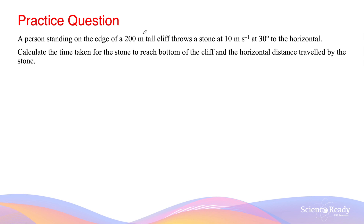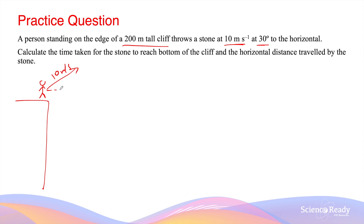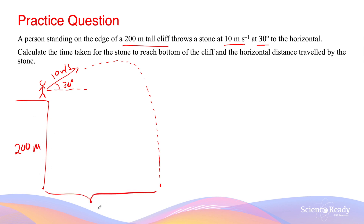A person standing on the edge of a 200-meter tall cliff throws a stone at 10 meters per second at an angle of 30 degrees to the horizontal. Calculate the time taken for the stone to reach the bottom of the cliff and the horizontal distance traveled. As always, it's a good idea to draw a simple diagram. The stone is thrown upward at 30 degrees to the horizontal, travels to maximum height, then returns back down to the bottom of the cliff.